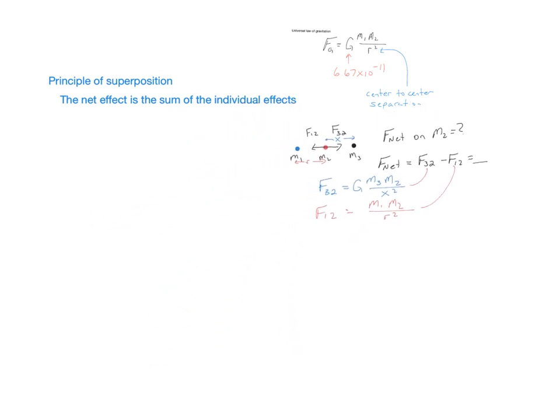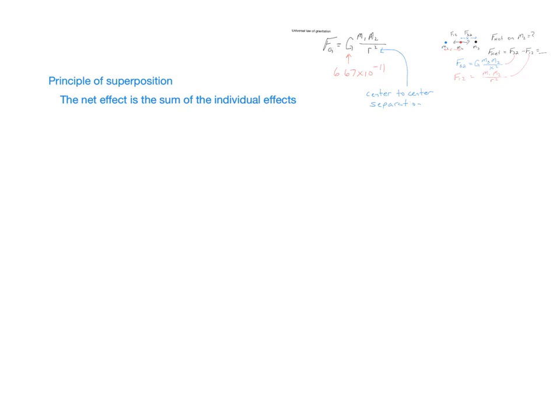So, a more complicated problem would be put a mass there, mass there, mass there, mass 1, mass 2, mass 3. So, now, what is the net force on mass 2? We still have to identify all the forces on mass 2. So, mass 1 is now pulling it up, and mass 3 is pulling it to the right.